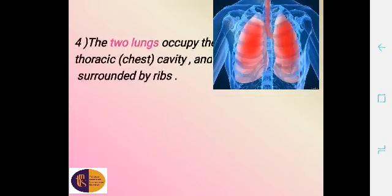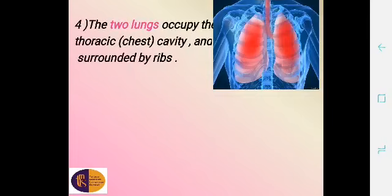Let's talk about the lungs and respiratory system, part two. The two lungs occupy the thoracic cavity, and these lungs are surrounded by ribs.